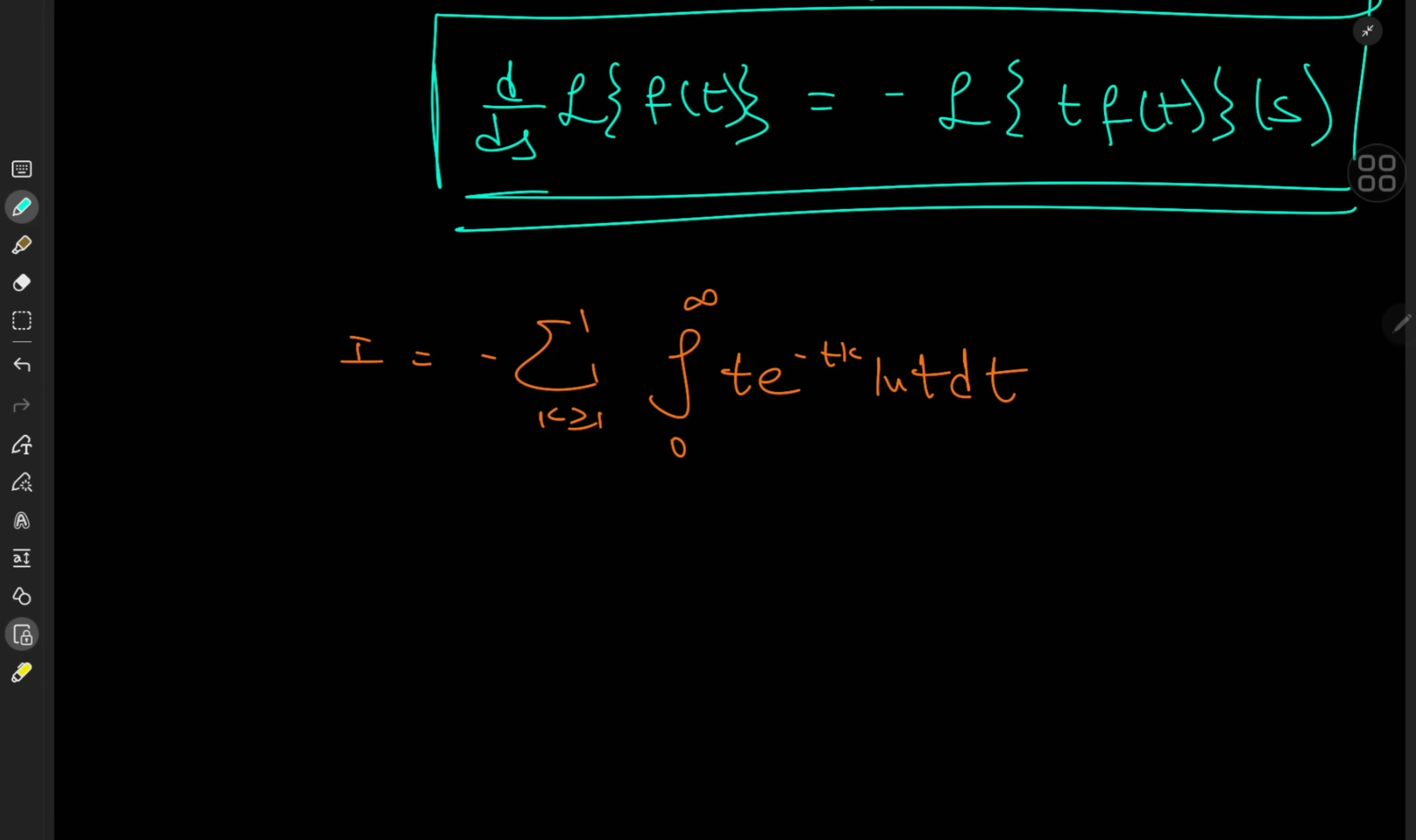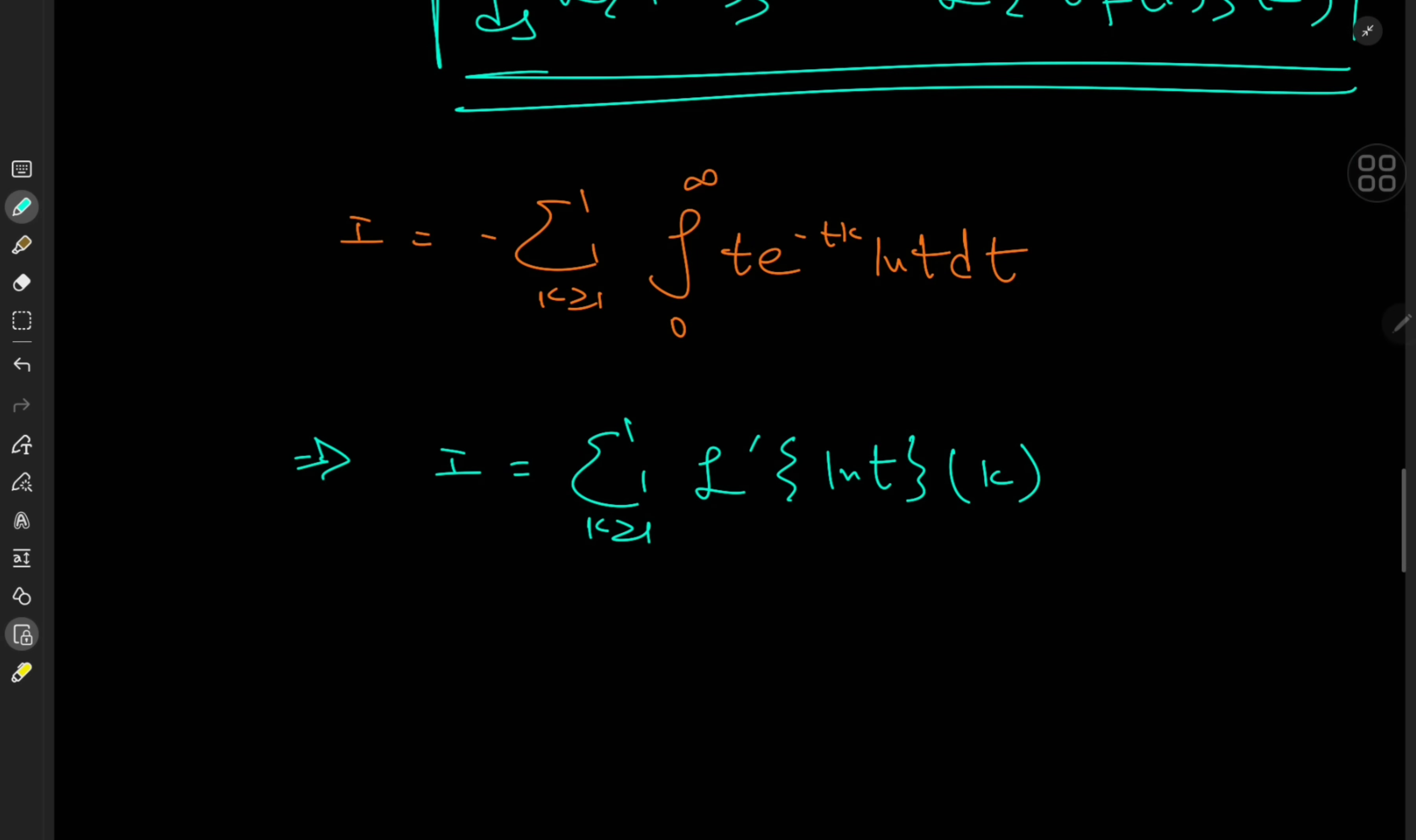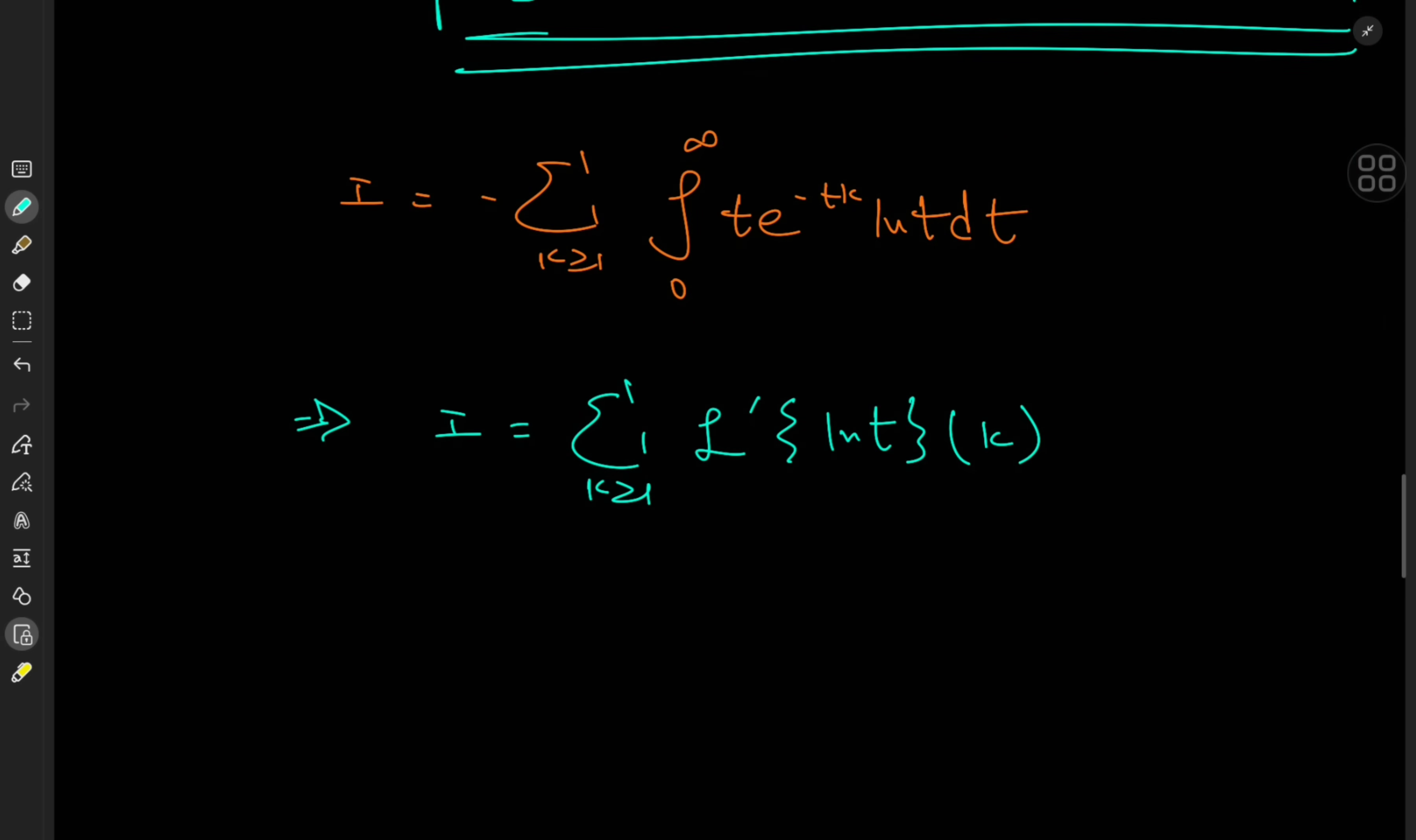So wait a minute, we already have a negative sign baked in, which means that the target integral i is just the sum over k from 1 to infinity of the derivative of the Laplace transform, that is Laplace prime, as I'm calling it, of what function exactly? Oh yeah, it's log t, expressed as a function of k. Okay, cool. Now, wait a minute, what exactly is the Laplace transform of the logarithm? Well, that's easy.